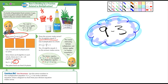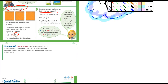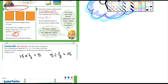The 'convince me' section says: use the same numbers in the multiplication equation 15 × 1/3 = 5 to write a division equation. We know that's true because one-third of fifteen is five. So how can we write a division equation that would make sense? How about five divided by one-third equals fifteen?